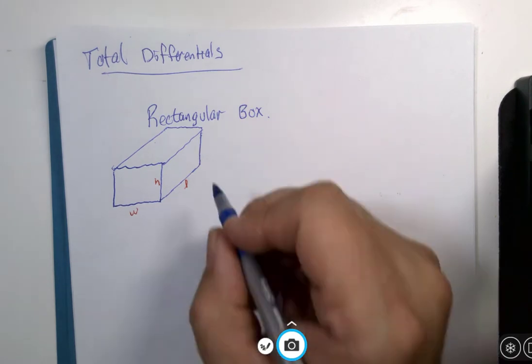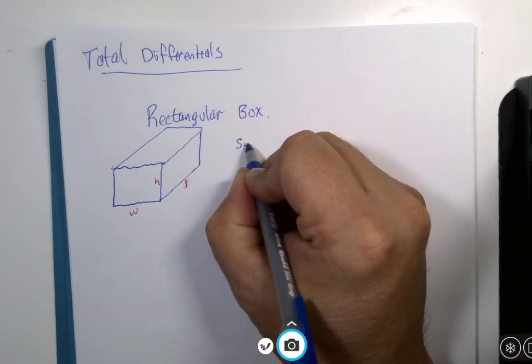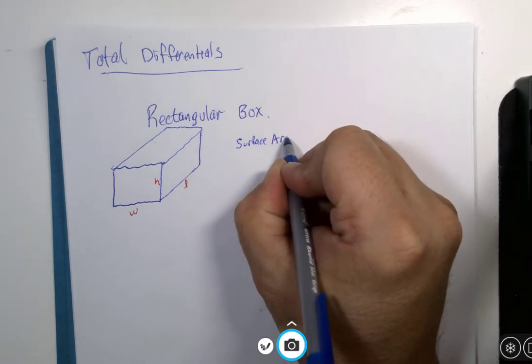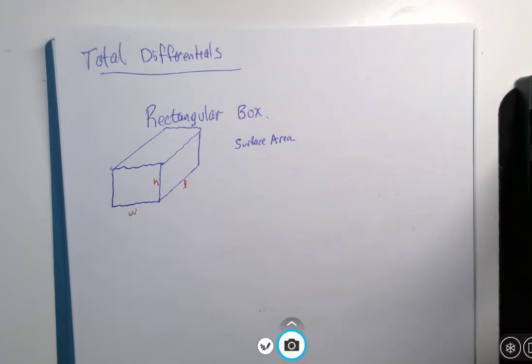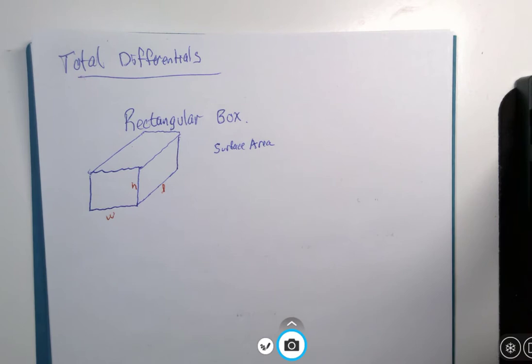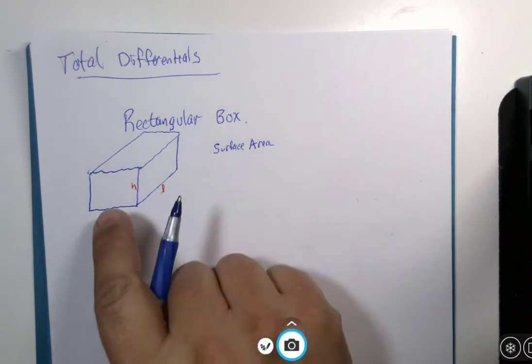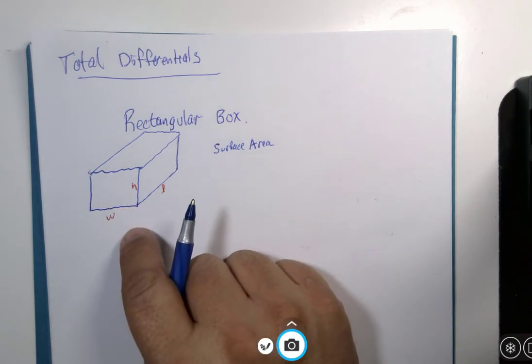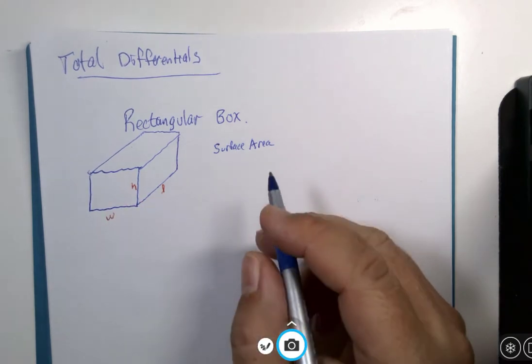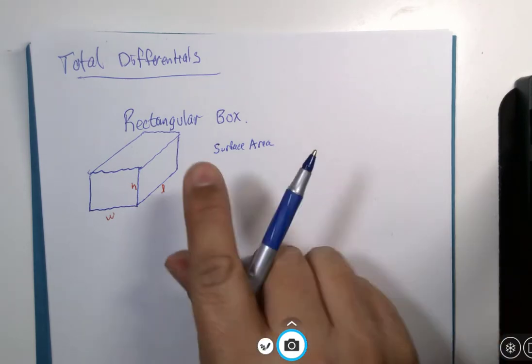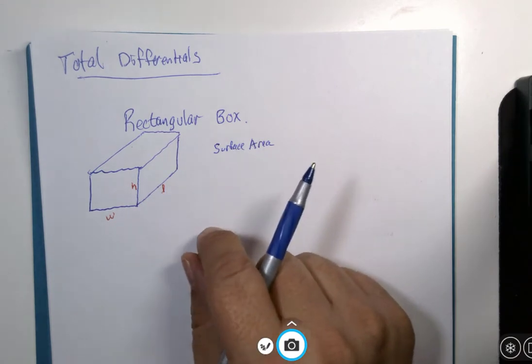We're not going to calculate volume. What we're going to look at is the surface area. So the surface area is found by, well in this case, there are six sides to the box. We can see three of them. It's by adding up the area of all six of the sides and each side is a rectangle.